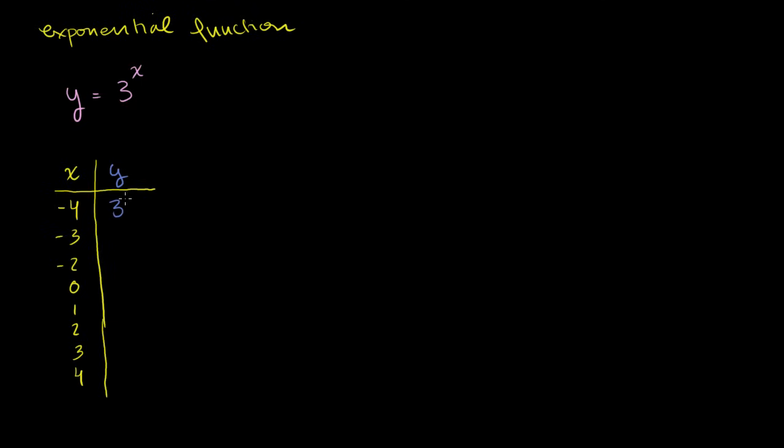Now, here y is going to be 3 to the negative 4 power, which is equal to 1 over 3 to the fourth power. 3 to the third is 27, times 3 again is 81. So this is equal to 1 over 81. When x is equal to negative 3, y is 3 to the negative 3 power. Well, that's 1 over 3 to the third power, which is equal to 1 over 27. So we're going from a super small number to a less super small number.